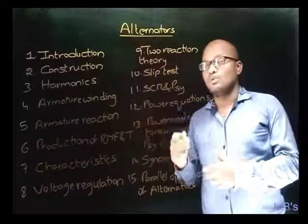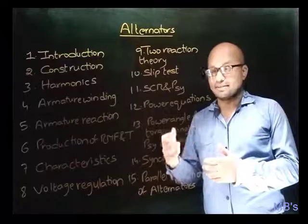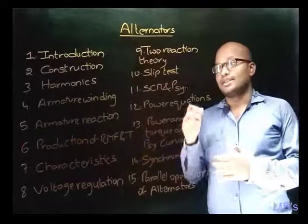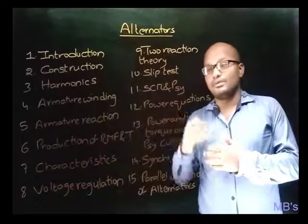Next, production of rotating magnetic field and torque — how rotating magnetic field is produced and how torque is produced can be known from this topic. Next, characteristics — the important characteristics of alternators are studied like open circuit characteristics, short circuit characteristics, etc. Next, voltage regulation — the causes for voltage variation are known first, and then what is voltage regulation and the different methods to find it are covered. Next, two-reaction theory — what is two-reaction theory and how it is useful for modeling the salient pole type alternator will be discussed. Next, slip test — how to find the saliency of a salient pole type alternator will be studied.